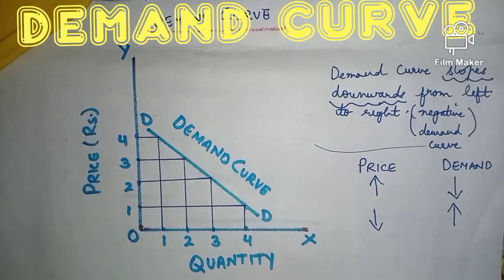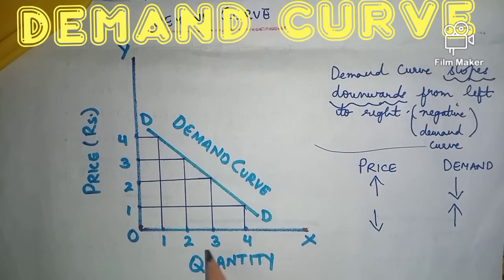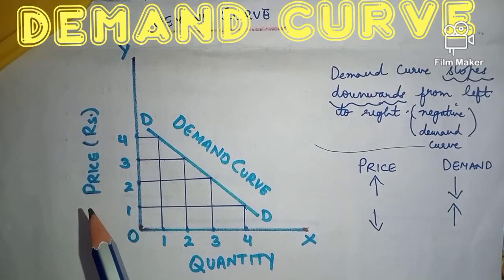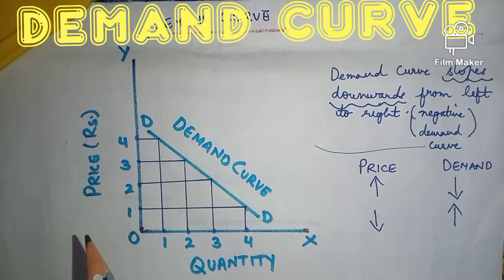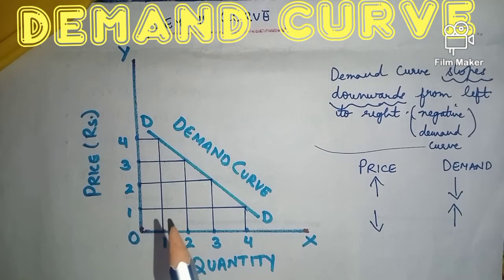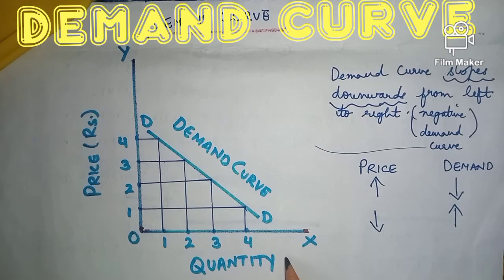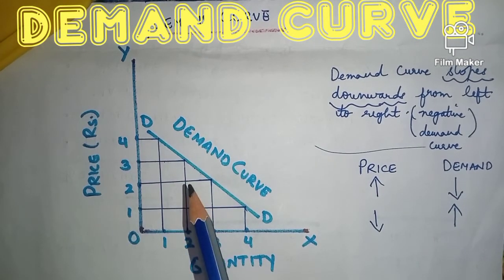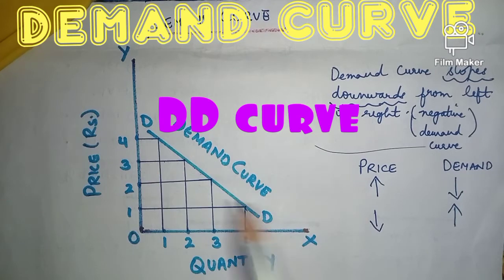In this figure of the demand curve, the x-axis represents the quantities demanded by a consumer, and the y-axis represents the prices of the commodity. The demand of a commodity is shown on the Ox quantity axis, and prices on the Oy axis. The demand curve in short is also known as DD — DD is the short form of demand curve. Every point on this demand curve expresses the relation between prices and quantities demanded by the consumers.